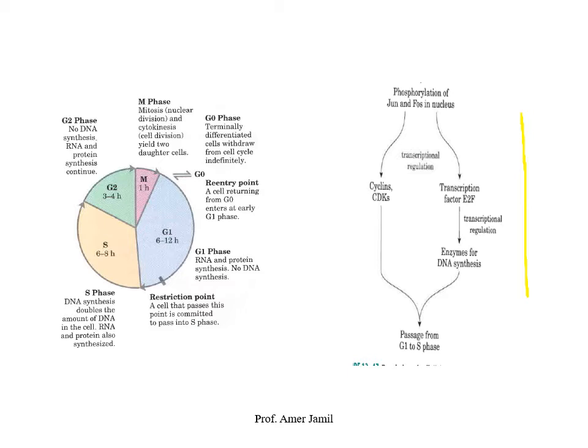With reference to replication, the key point is the restriction point in the cell cycle. Once the cell crosses this restriction point — at the G1 to S phase transition — nothing can stop replication. The S phase is the DNA synthesis phase. This restriction point is controlled by cyclins and cyclin-dependent kinases, and once the transition is made, replication proceeds unimpeded.